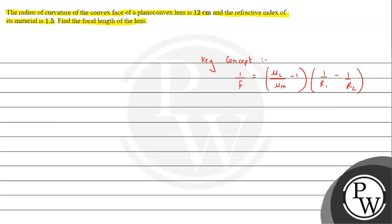So here we have a plano-convex lens. This is what the plano-convex lens is - one side is convex.